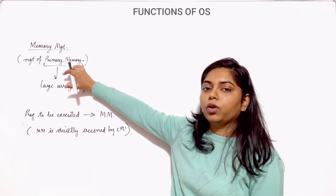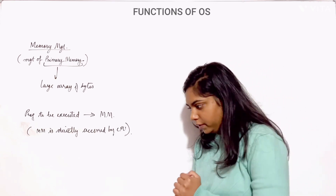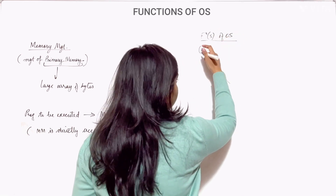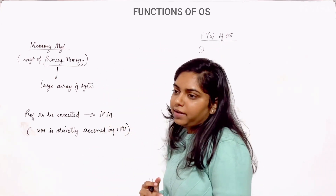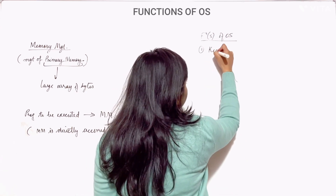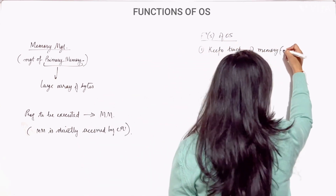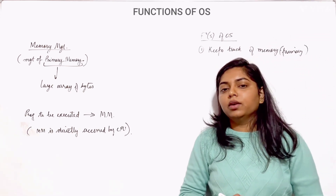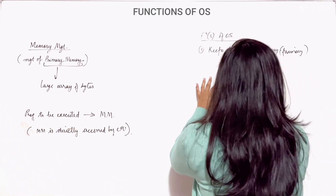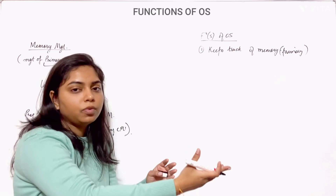So that was about main memory — what it is and why a program should be in main memory. Now let's discuss the functions that the OS performs in case of memory management. The first function is that it keeps track of primary memory — which part of primary memory is in use by which process and which part is not in use.